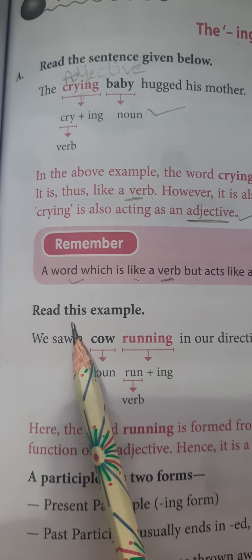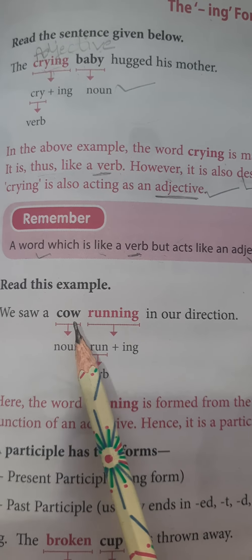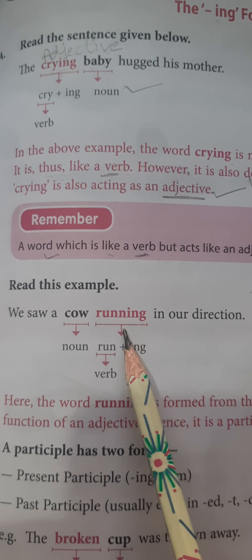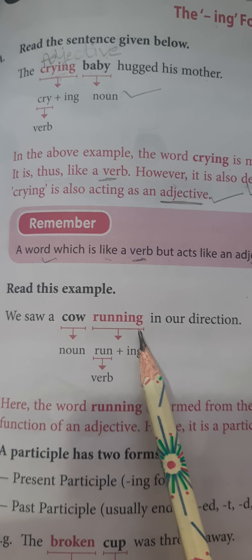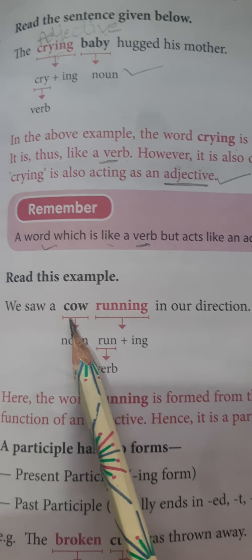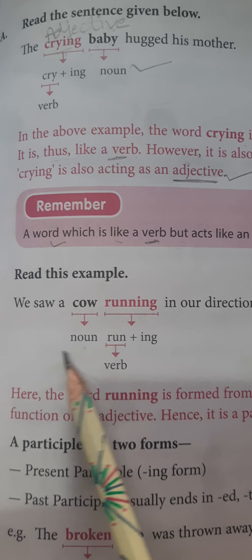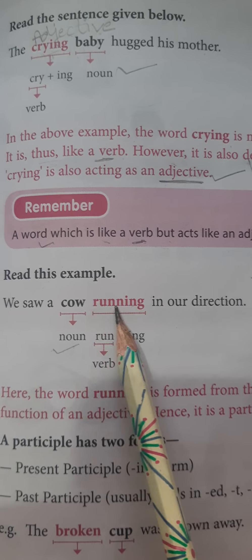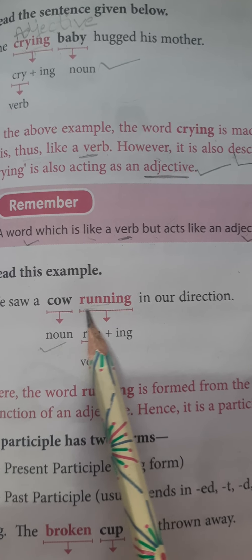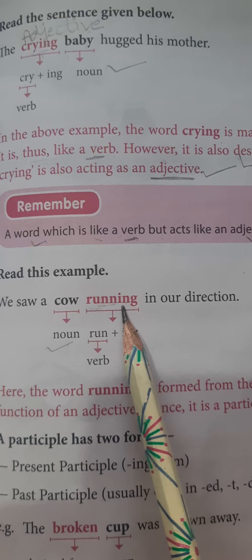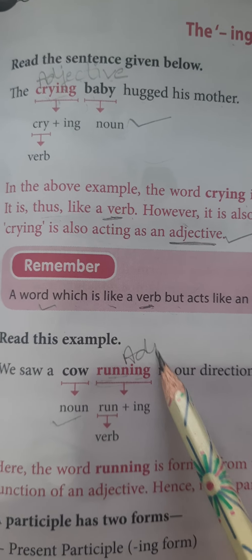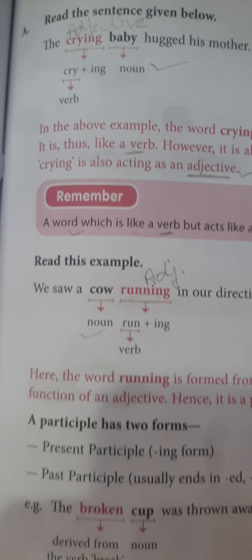Here we are having another example. Read this: 'We saw a cow running in our direction.' Humne ek gaay dekhi jo humari taraf bhaag rahi thi. So here we see that 'cow' is a common noun and 'running' — what type of cow was that? The cow was running. First form plus ing is applied here. Maybe it is a verb, but here it is giving us the function of an adjective. So it is an adjective here.